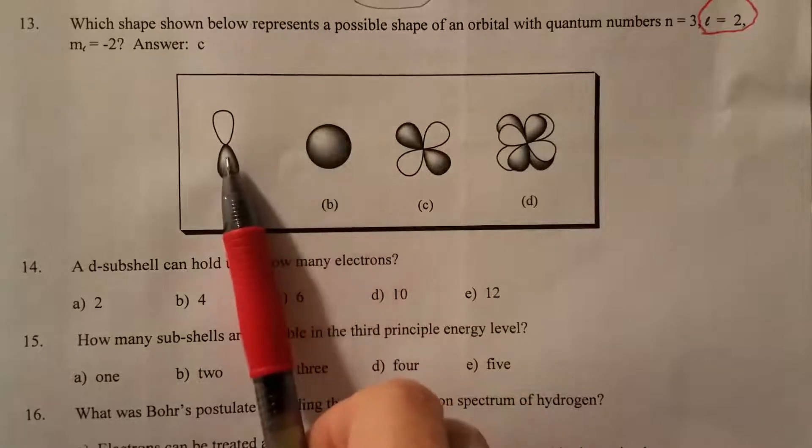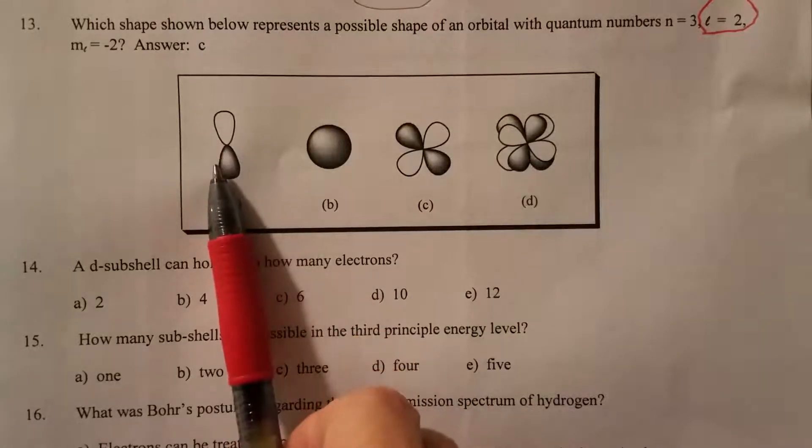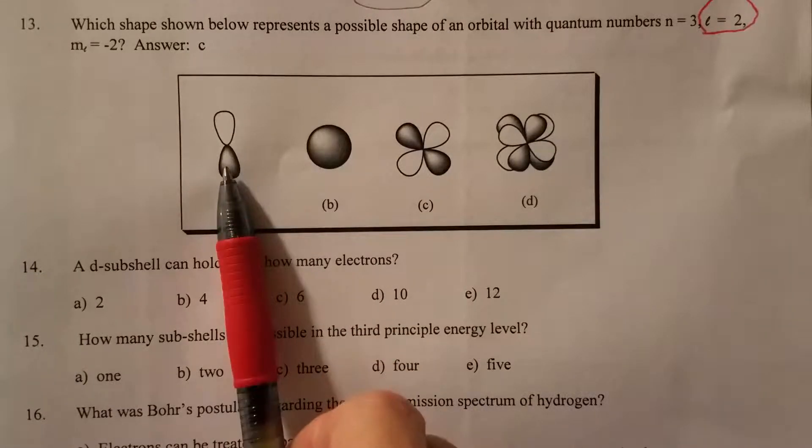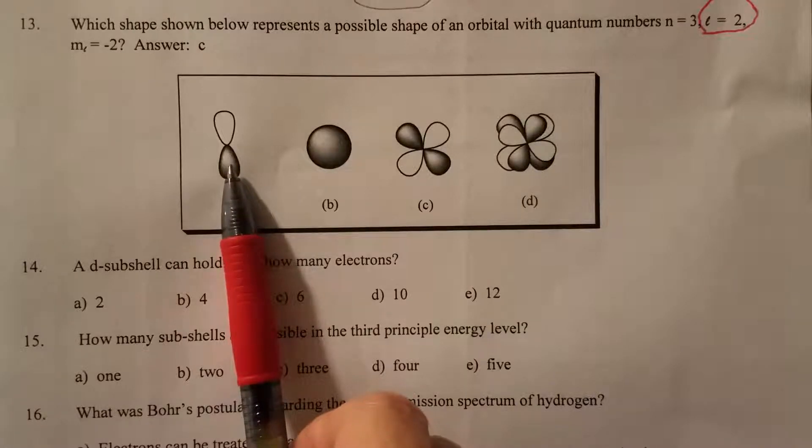Okay, so the p subshell is this one. It's two lobes or like a dumbbell shape. Okay, so that's the p subshell.